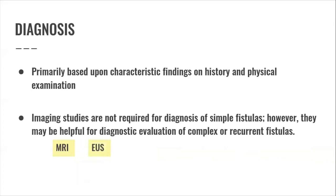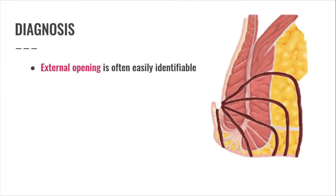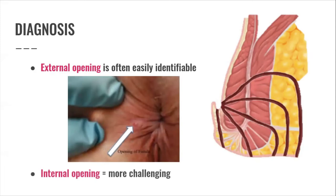The external opening is often easily identifiable because it is palpable and usually indurated. The internal opening is more challenging to identify, so knowledge of the Goodsall's rule is important as it will serve as a guide.